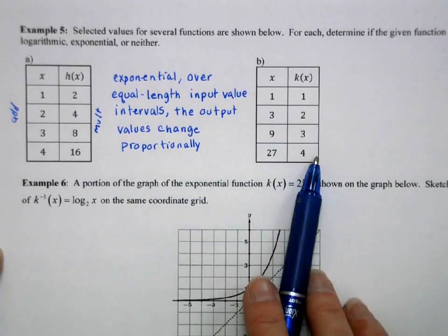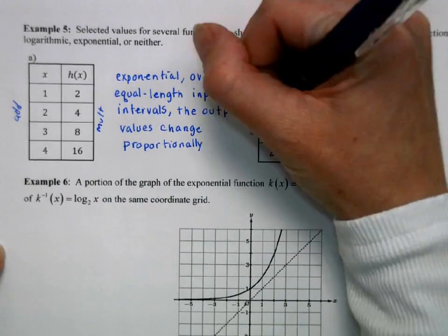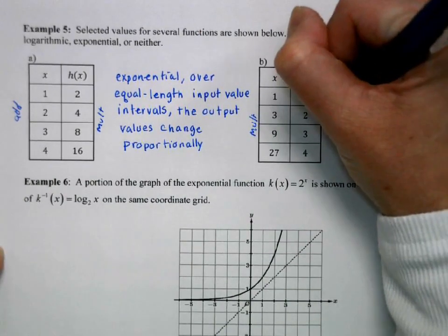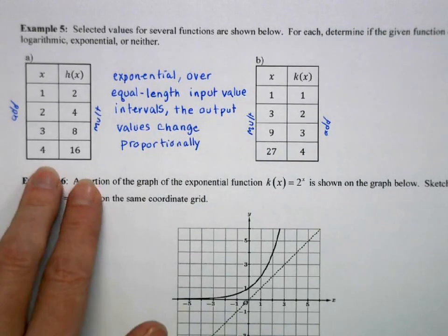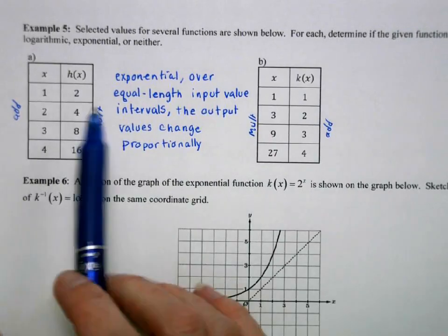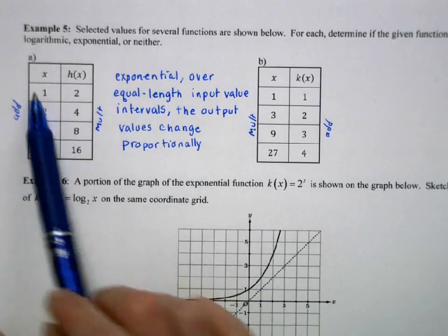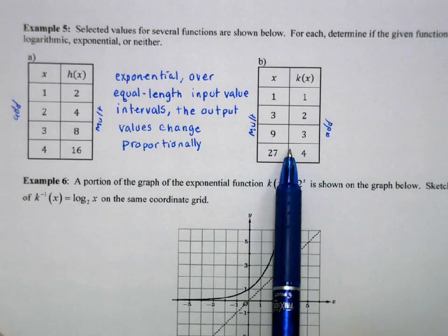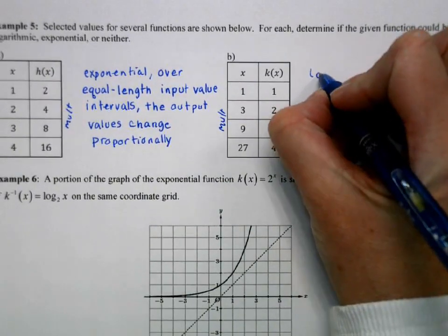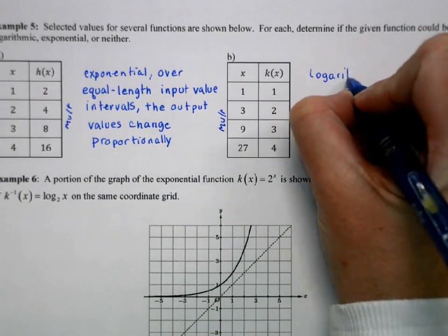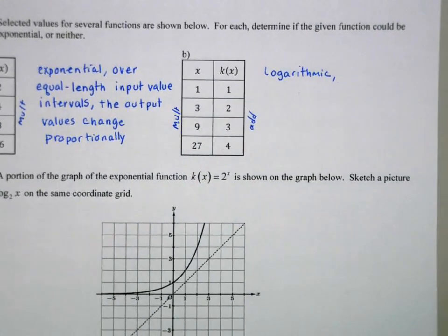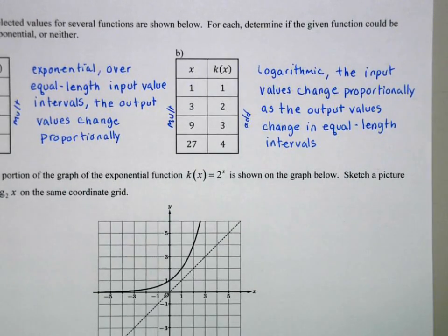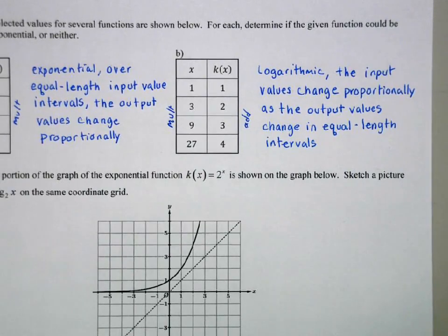This one, the reverse is true. My input values we're multiplying, my output values we are adding. So relating this back to inverses, if our x and y values are switched, that's how we create an inverse, numerically. So this is the inverse of an exponential, which is logarithmic. So our justification is going to be kind of backwards. That's going to look something like the input values change proportionally as the output values change in equal length intervals.